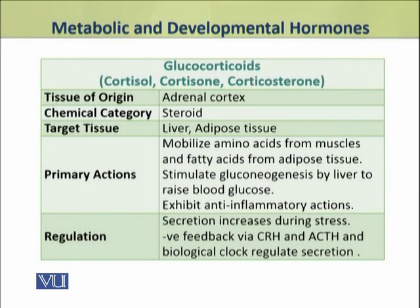Glucocorticoids, which include cortisol, cortisone and corticosterone, are produced by the adrenal cortex. These three are steroid hormones. Their target tissues are liver and adipose tissue. Their primary actions are to mobilize amino acids from muscles and fatty acids from adipose tissue.